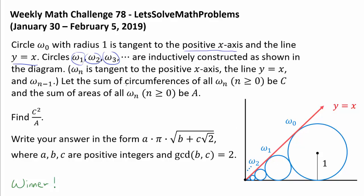Such that ωₙ is tangent to the positive x-axis, the line y equals x, and the circle that came immediately before it, so ωₙ₋₁.